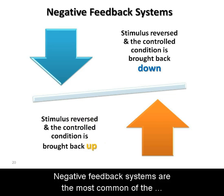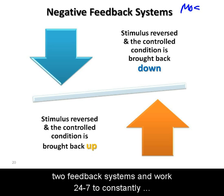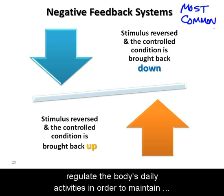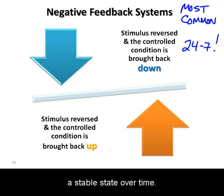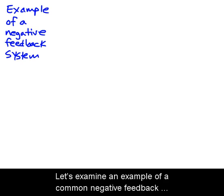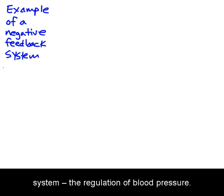Negative feedback systems are the most common of the two feedback systems, and work 24-7 to constantly regulate the body's daily activities in order to maintain a stable state over time. Let's examine an example of a common negative feedback system: the regulation of blood pressure.